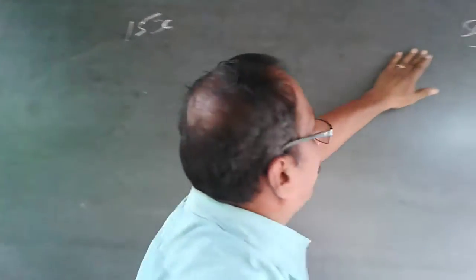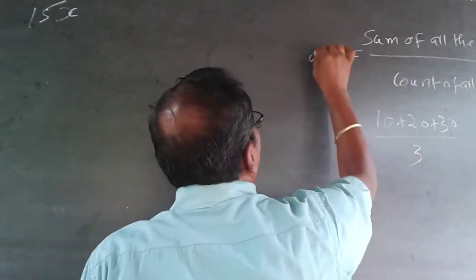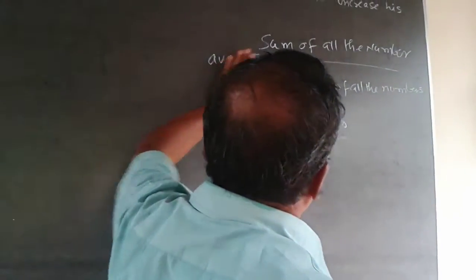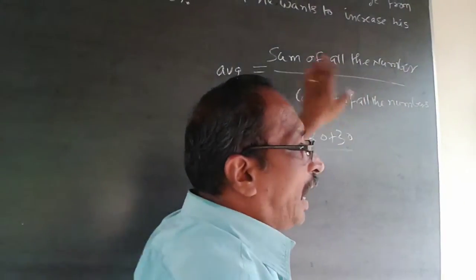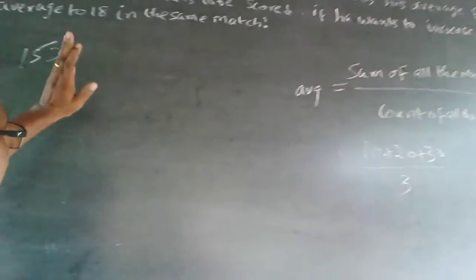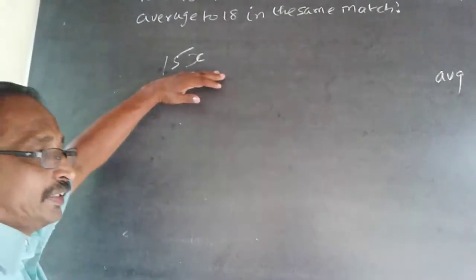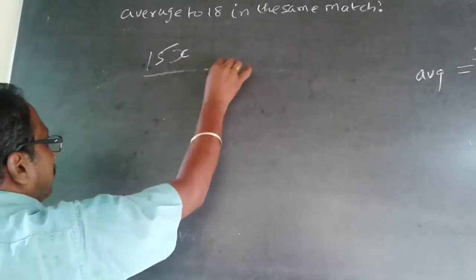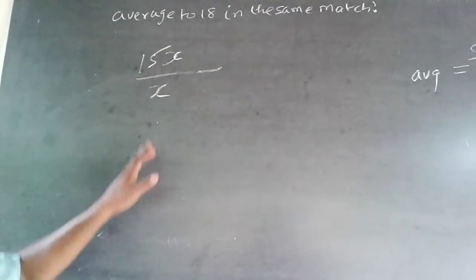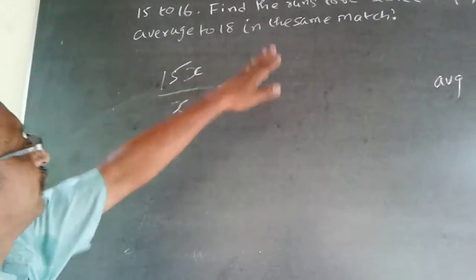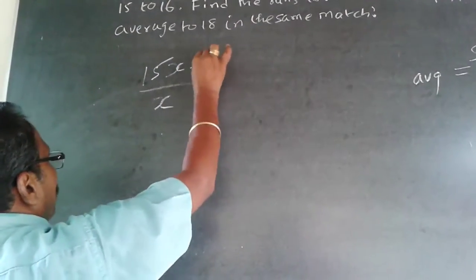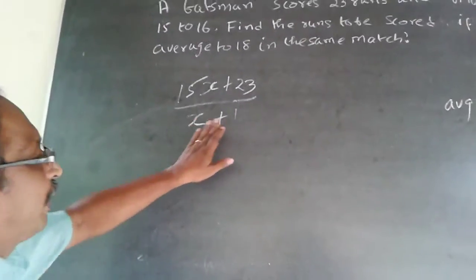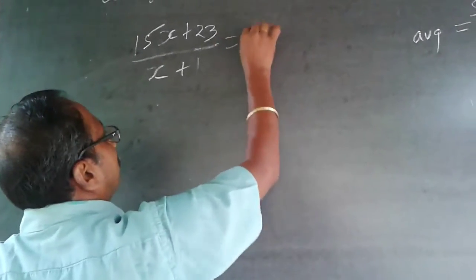So 15 times x will be the number of runs scored up till the previous match. Count of all numbers times average gives the sum, so 15x is the total runs. Divided by x gives the average of 15. Now we are scoring 23 runs — plus 23 — so obviously he is playing one more match, the number of matches increases by 1, and the average is going up to 16.